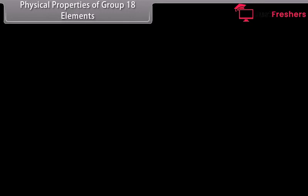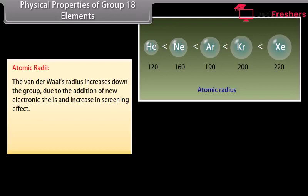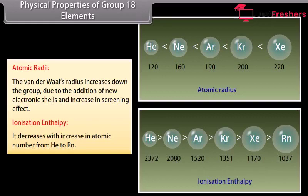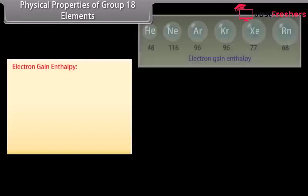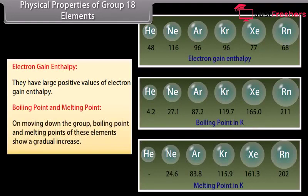In noble gases, atomic radii correspond to van der Waals radii, which increase down the group due to addition of new electronic shells and increases in screening effect. The ionization enthalpies of noble gases are very high due to their stable configurations, and decrease with increase in atomic number from helium to radon. Since noble gases have stable electronic configurations, they have no tendency to accept electrons and therefore have large positive values of electron gain enthalpy. Boiling points and melting points show a gradual increase down the group due to corresponding increase in the magnitude of van der Waals forces of attraction.